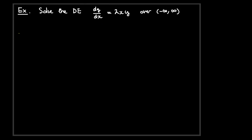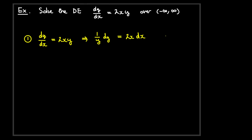To solve this, we apply the first step: separate the equation by putting everything involving y on one side and everything involving x on the other. If dy/dx = 2xy, then dividing by y and multiplying by dx gives us (1/y) dy = 2x dx. We make an important assumption here: that y is not identically zero over this interval.